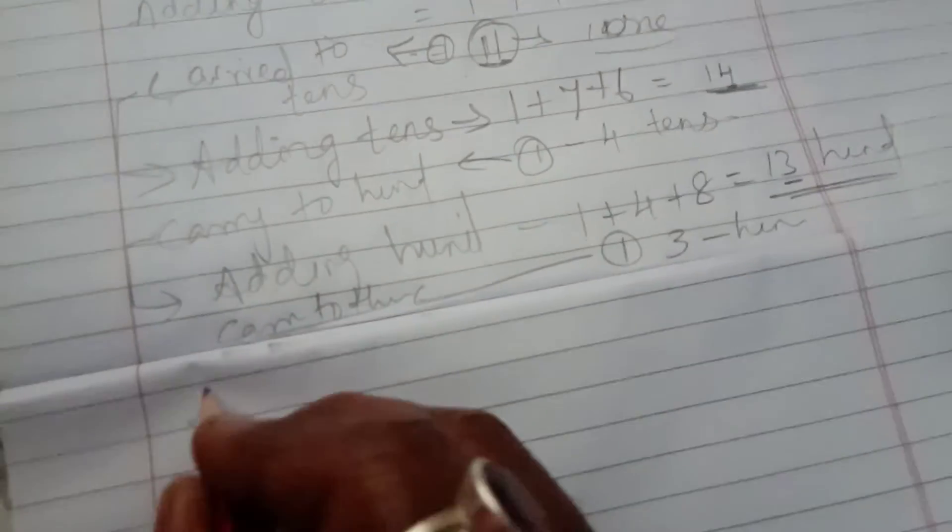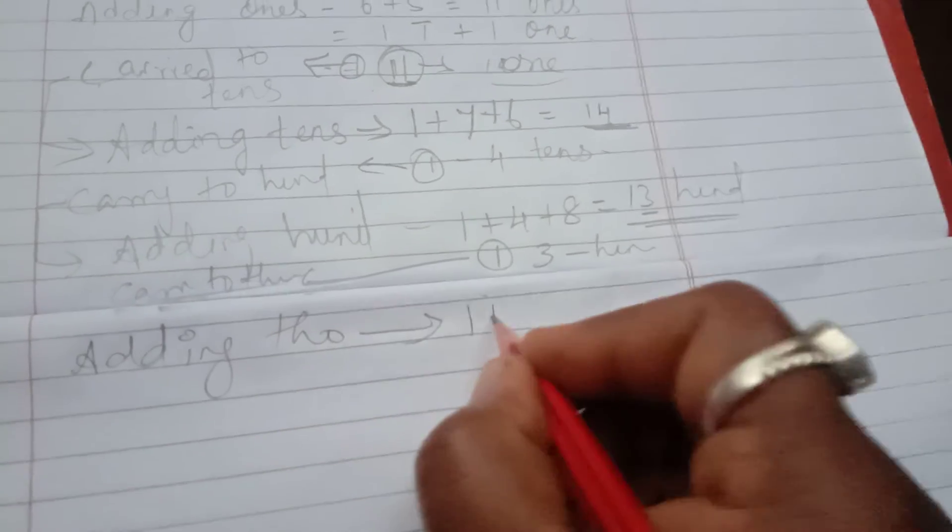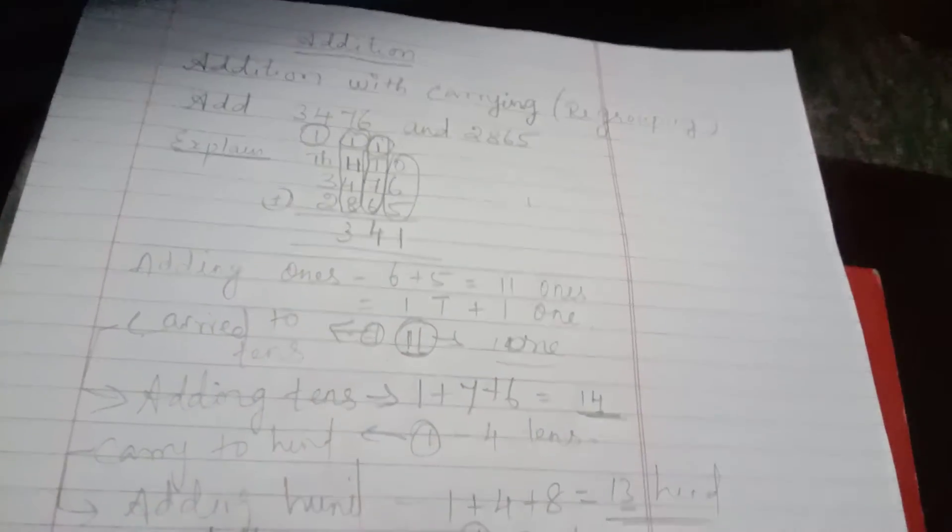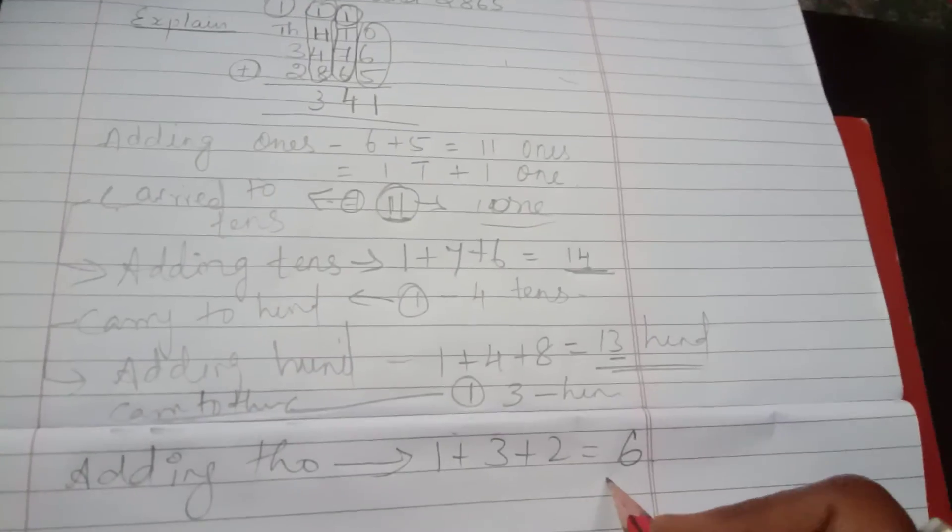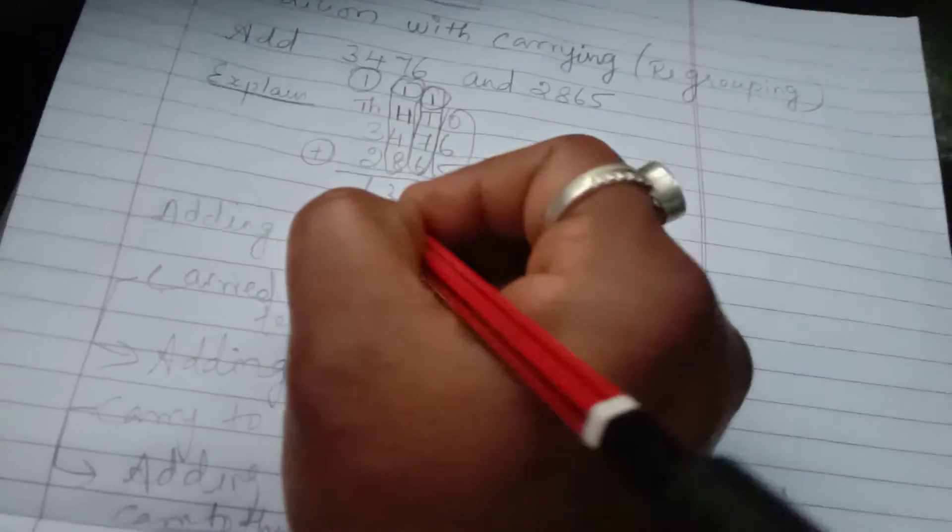So adding thousands place. Adding thousands place. So now 1 plus 3 plus 2 equals 6. So I am going to write 6. We got the number.